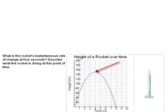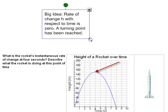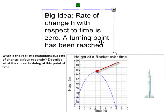The big idea here was the rate of change of height with respect to time is zero, and we're going to look at that more closely later on in the course, but that means that a turning point has been reached. We've reached the maximum height for that rocket.